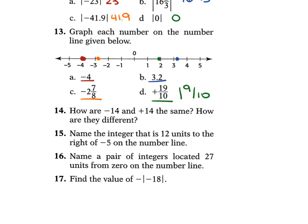Problem 14 asks: how are negative 14 and positive 14 the same, and how are they different? Well, they are additive inverses of each other, which just means they have the same number but opposite signs.